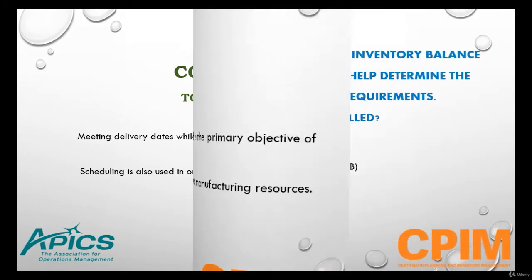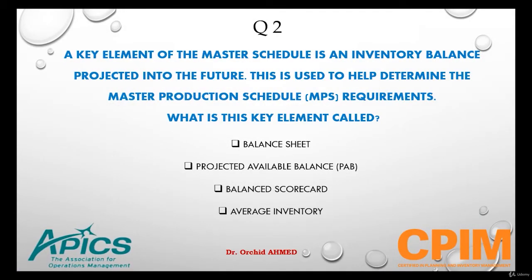Question number two: A key element of the master schedule is an inventory balance projected into the future. This is used to help determine the master production schedule requirement. What is this key element called?